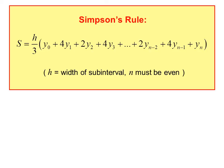Simpson's rule: S equals h/3 times (y₀ plus 4y₁ plus 2y₂ plus 4y₃ plus ... plus 2y_{n-2} plus 4y_{n-1} plus yₙ), where h equals the width of a subinterval and n must be even. Notice the coefficients: the first term is 1, the second is 4, then we alternate 2s and 4s until the end, finishing with 4 then 1. The 3 in the denominator comes from using the weighted average to develop the formula.